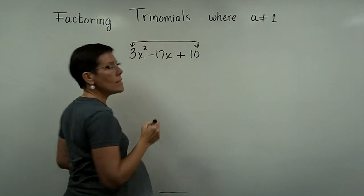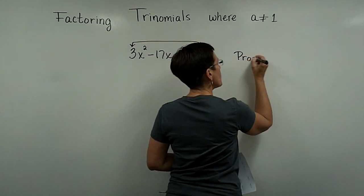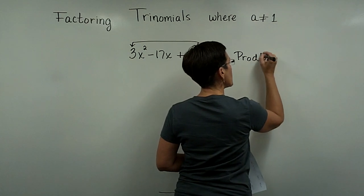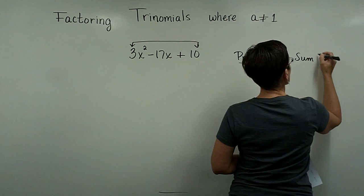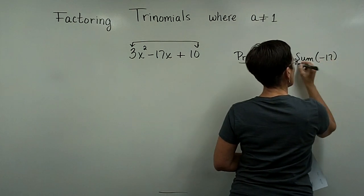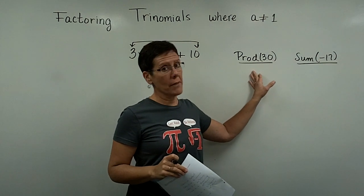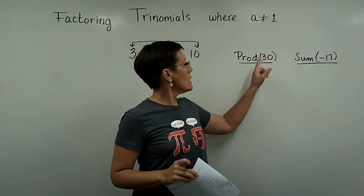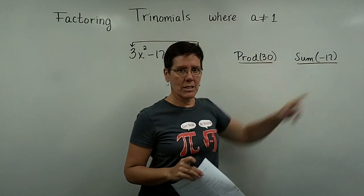So A times C is 30. So I'm looking for two numbers whose product is a positive 30 and I want those to add up to be a negative 17. So again these two numbers both have to be negative in order for their product to be positive and for them to add to be a negative number.